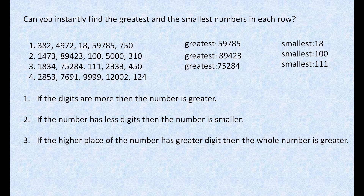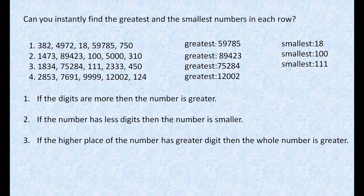Let's move to the next example: 2853, 7691, 9999, and 122,124. In this example, 122,124 has more digits, so this number is the greatest. And 2853 has the smallest number of digits, so the smallest number is 2853.